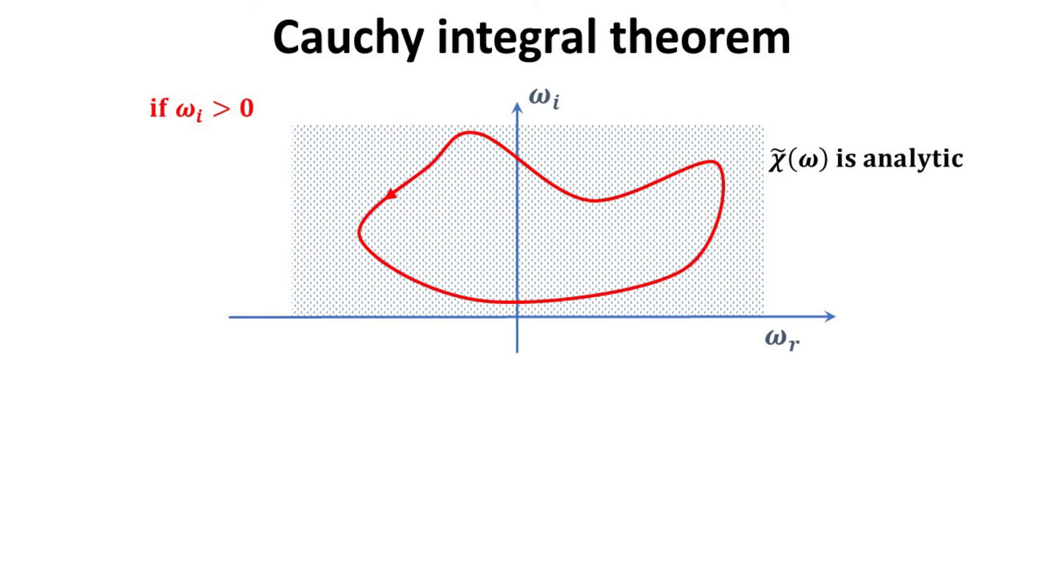Okay, we have established that our generalized response function, chi tilde, is indeed an analytic function over the upper half of the complex omega plane.